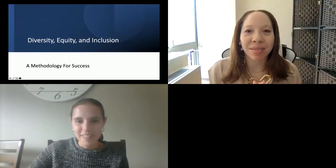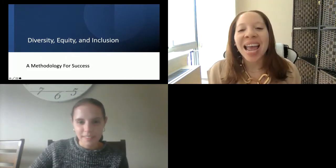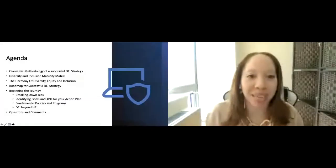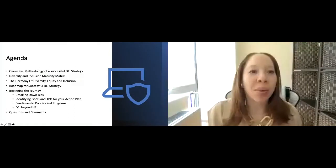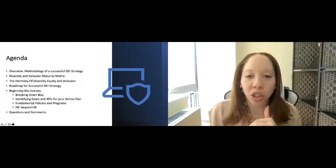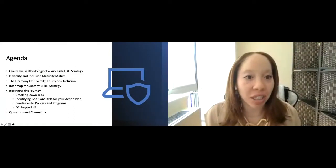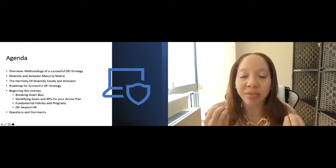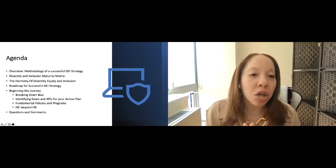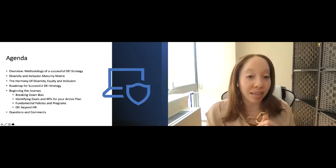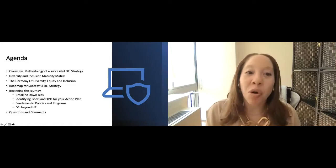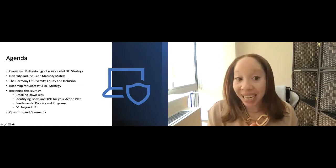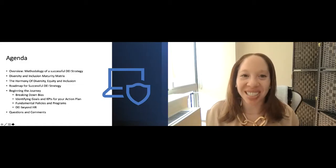Wonderful. Well, thank you so much for having me. I am super excited to be here. And I know we don't have a lot of time, so we're going to get straight into it. So as an agenda, we're going to talk about an overview of the methodology for a successful D&I strategy. We're going to go through the diversity and inclusion maturity matrix, which is very pivotal and key in understanding your D&I strategy. We're going to talk about the harmony of diversity, equity and inclusion, the roadmap for a successful D&I strategy, breaking down the journey and beginning it, and then we're going to go into some questions and comments.